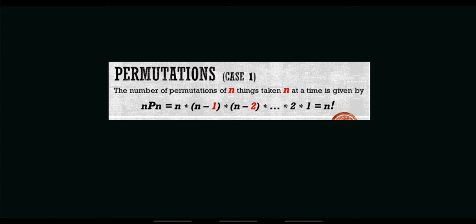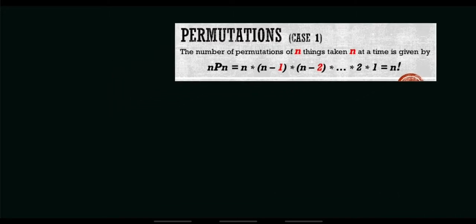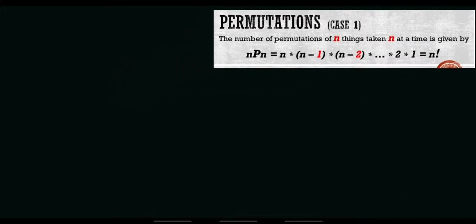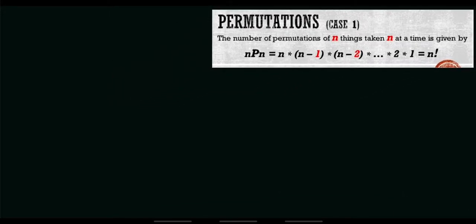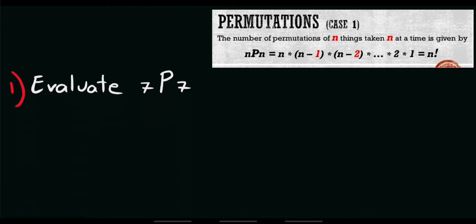So, if that's the case, for our case number 1, automatically we have permutation of n things taken n at a time. The value of n is simply a number. So, if that's the case, we will use the concept of permutation.